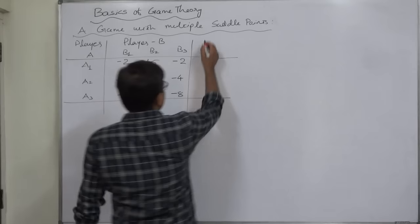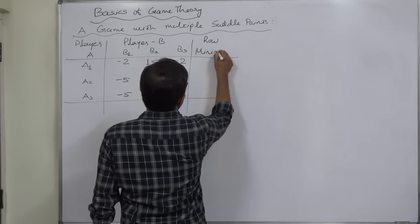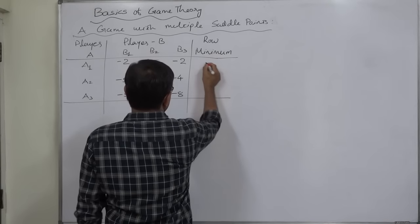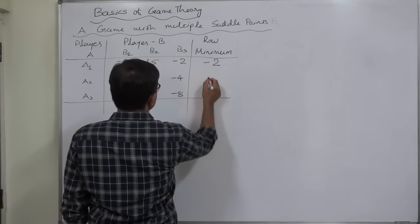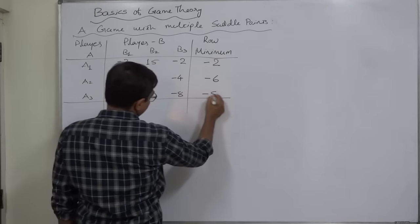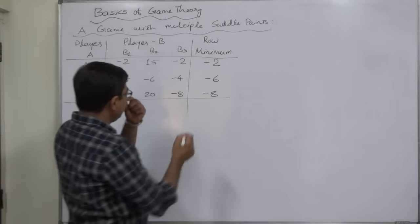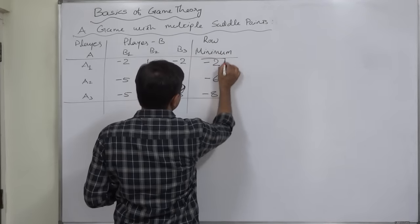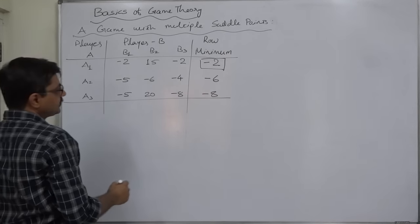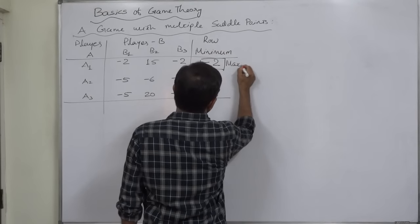Let us first write the column of row minimums. The minimum value in the first row is minus 2, in the second row it is minus 6, and in the third row it is minus 8. Now let us select the maximum of these minimum values — minus 2 is the maximum of these three minimum values, so that becomes the maximin value.